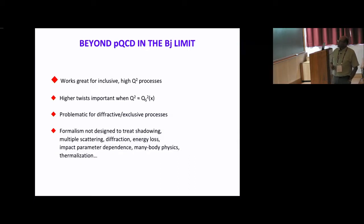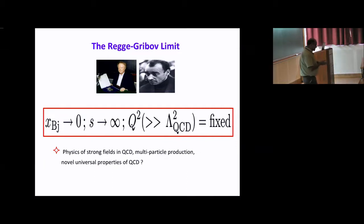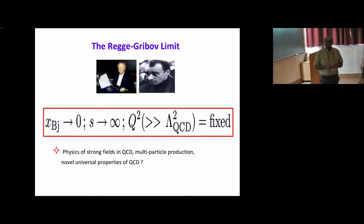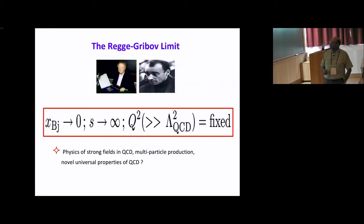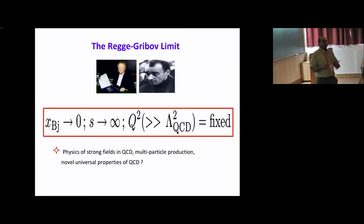There's another limit of the theory that is actually older than the Bjorken limit — the Regge limit, associated with Regge and Gribov. It's the limit of x_Bjorken going to zero at very high energies: S going to infinity, while keeping Q² fixed. The Bjorken limit had Q² going to infinity, S going to infinity, keeping x fixed; in the Regge limit instead you take x to zero, S to infinity, and keep Q² fixed.